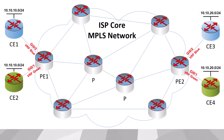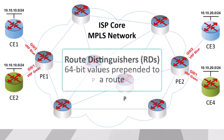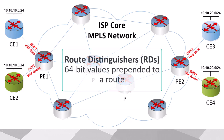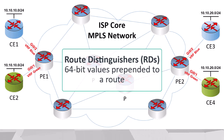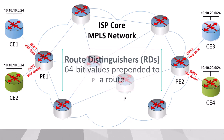To do this, we use what are called route distinguishers, or RDs. RDs are 64-bit values that are prepended to these routes to make them unique within the MPLS infrastructure.